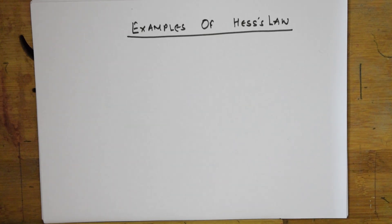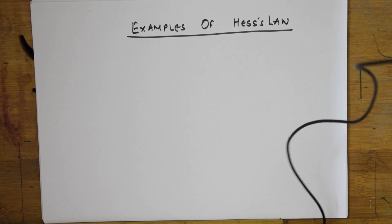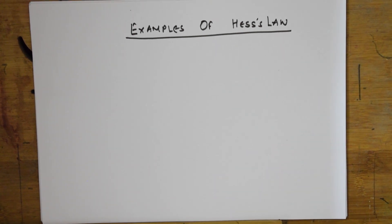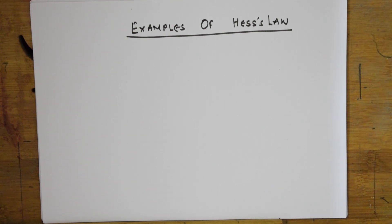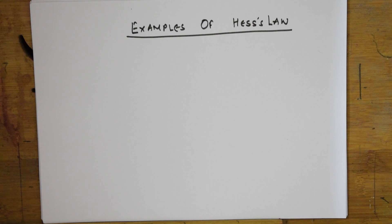Welcome students to one more session on Hess's Law. In the previous video, we learned the concept of Hess's Law — whether a reaction occurs in one step or in two or more steps, the total heat evolved is the same. There may be a very minute difference, which is why Hess's Law is scientifically proven.